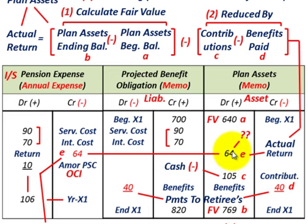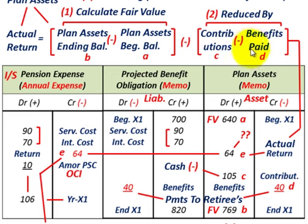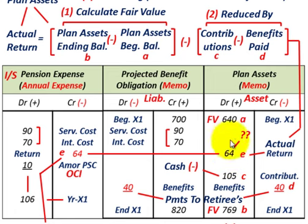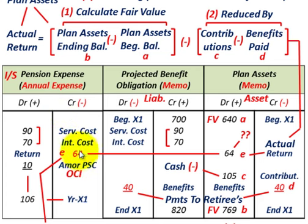By definition, the actual return on plan assets includes the difference between your contributions made and the benefits paid out. Now, let's say we had a positive return on our plan assets for the year of $64,000. That would debit or increase our asset account by $64,000. The credit would go against our pension expense — since there was a positive return on the investment, that actually reduced our pension expense.